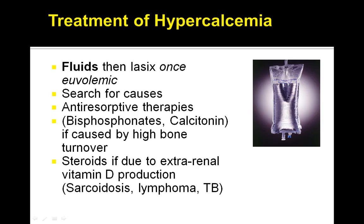What is the treatment of hypercalcemia? First, give fluids, and then Lasix once the patient is euvolemic — understand the sequence of treatment. You want to fluid-load the patient first, then give Lasix. Search for causes, and use anti-resorptive therapies such as bisphosphonates and calcitonin. Steroids are beneficial if patients have hypercalcemia due to extra-renal vitamin D production, like in sarcoid, lymphoma, or TB — the granulomatous diseases.